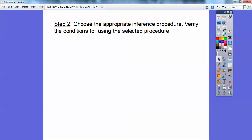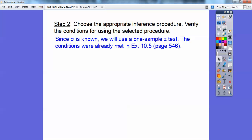All right, so choose the appropriate inference procedure and verify the conditions for using the selected procedure. Okay, so since the standard deviation is known, which is usually not the case, you guys, we're going to use a one-sample Z test. When the standard deviation is not known, that's the next chapter, I think it's the next chapter, and then that's a T test, you guys. But whenever it's given, whenever this σ is given, then it's a definite Z test, okay?